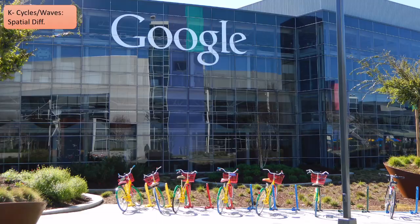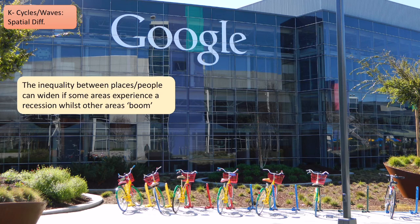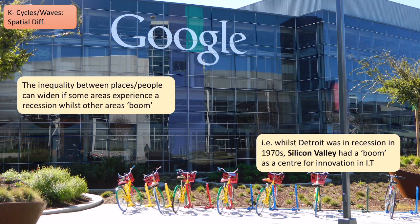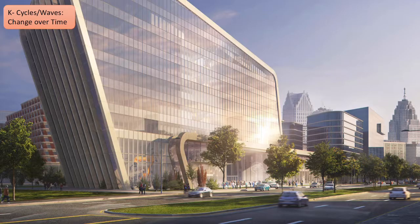What also makes the gap between places even wider is that when some areas are experiencing recession, other areas are experiencing a boom. We can see Google here, which is in Silicon Valley. While Detroit was suffering from the loss of car manufacturing, places like Silicon Valley became the boom centre for IT innovation near San Francisco, with lots of educated people working in telecommunications and computers. It became a real period of boom, and it's now reaching its peak — it could eventually go into recession in the future depending on what the next cycle is, while Detroit had slumped into decline.